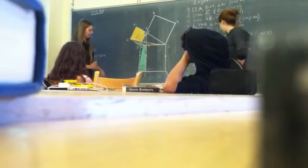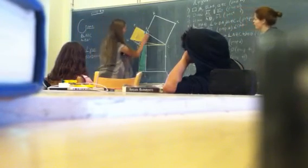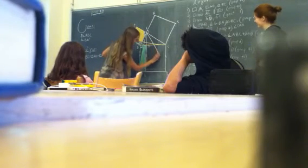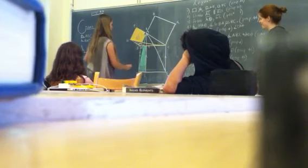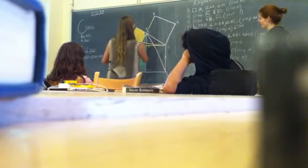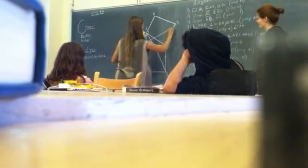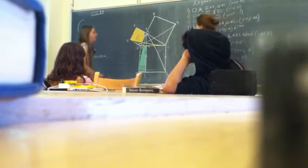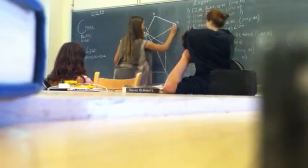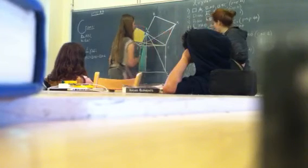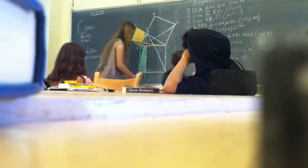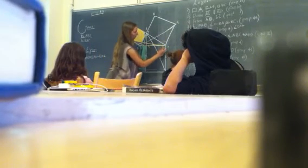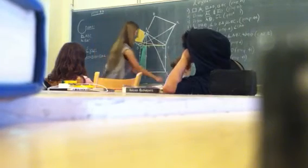Our next step is to draw lines AE and BK because of Postulate 1. At this point we are basically doing the exact same procedure that we just did — this is all repetition. Because of what is outlined above, we know that square AC is equal to parallelogram CL. This is the exact same reasoning, so you should be able to flip it in your head and see how it's the same thing.